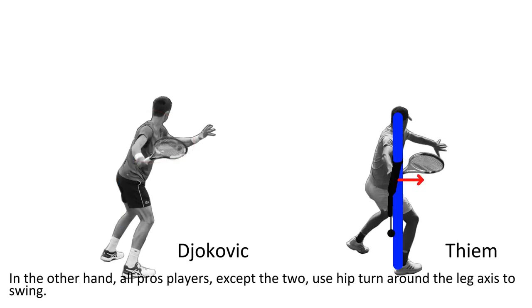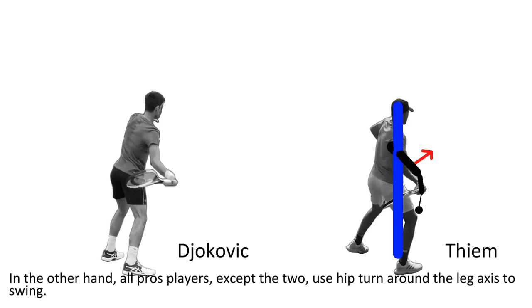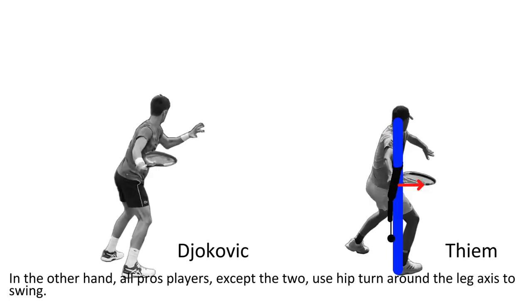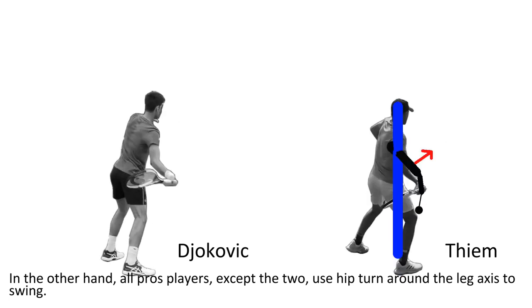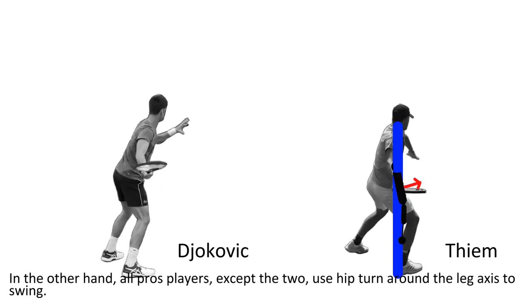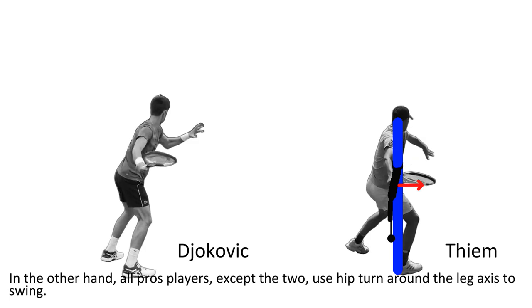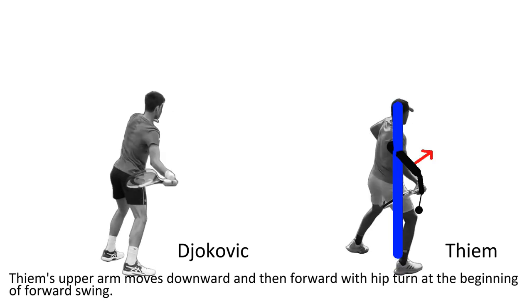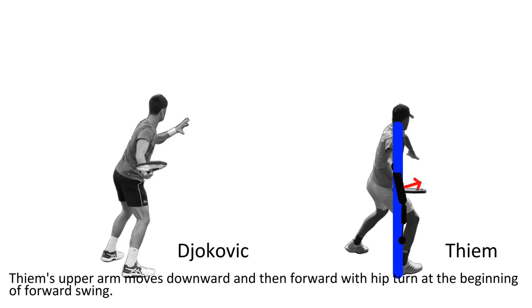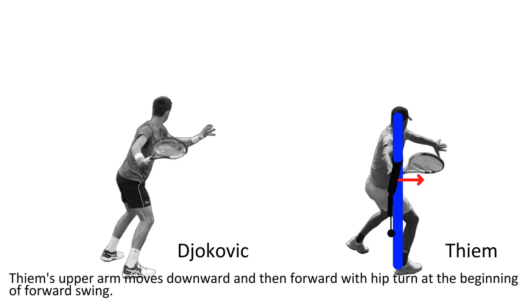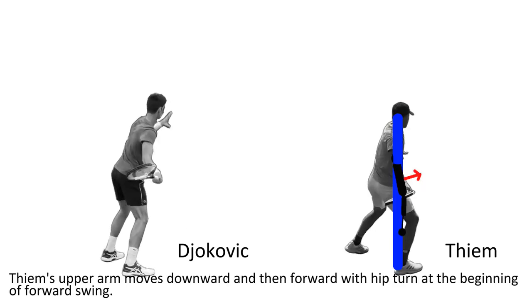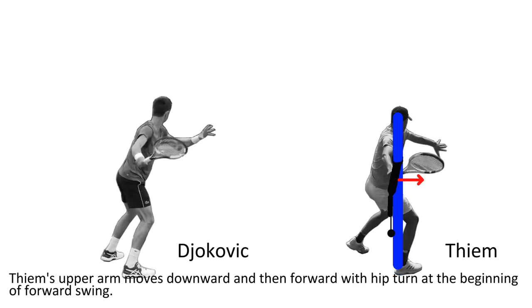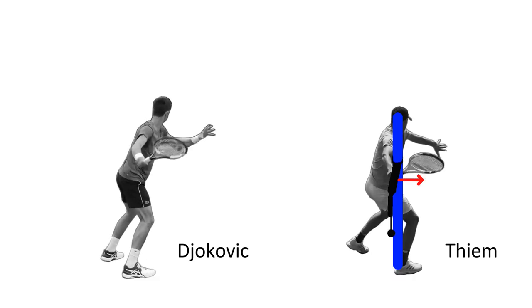On the other hand, all plus players except these two use hip-turn around the leg axis to swing. TM's off-arm moves downward and forward with his hip-turn at the beginning of the forward swing.